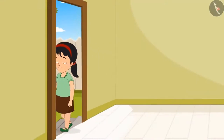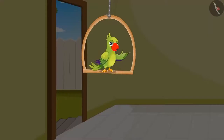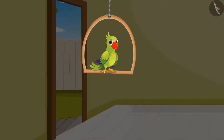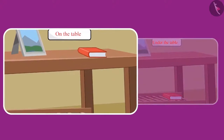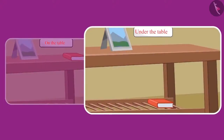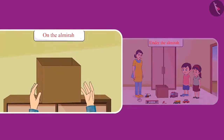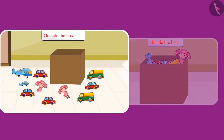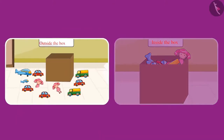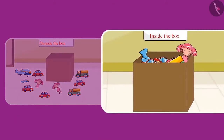Then both of them went out to play. Children, did you see how Pinky and Chotu changed the position of different objects while cleaning the rooms? Like picking up the notebook from the table and placing it under the table, the toy box was on top of the almira, and Chotu and Pinky picked all the toys lying outside the box and kept them inside the box.